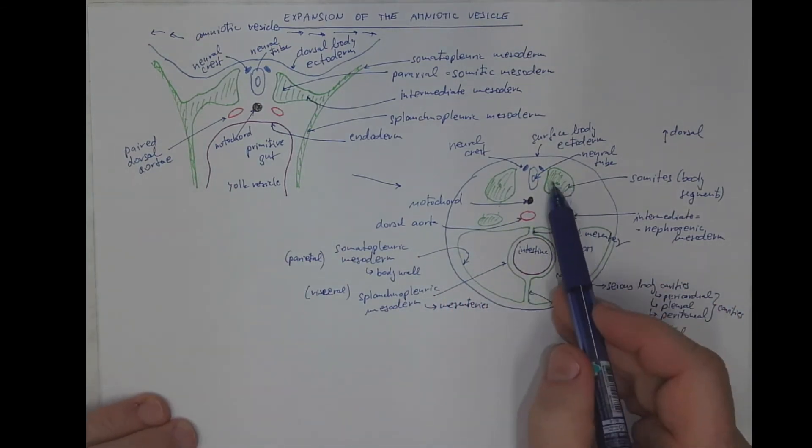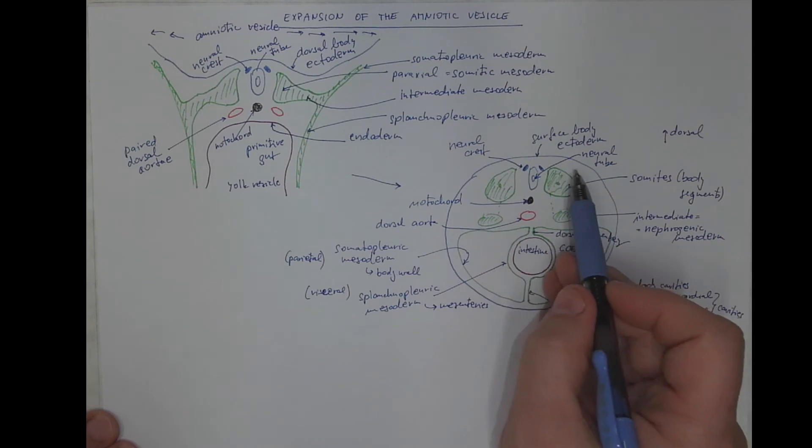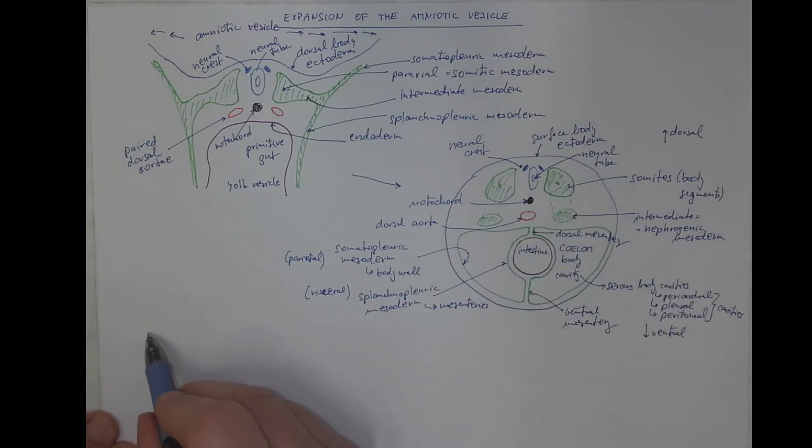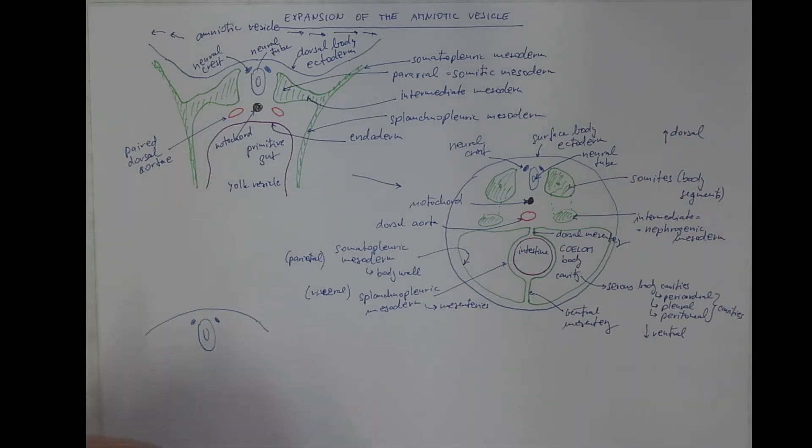Now, let's pay some attention to the body somites at first. It will be fine just to draw this part, the dorsal part of the embryo with the neural tube, neural crest, and the somites.